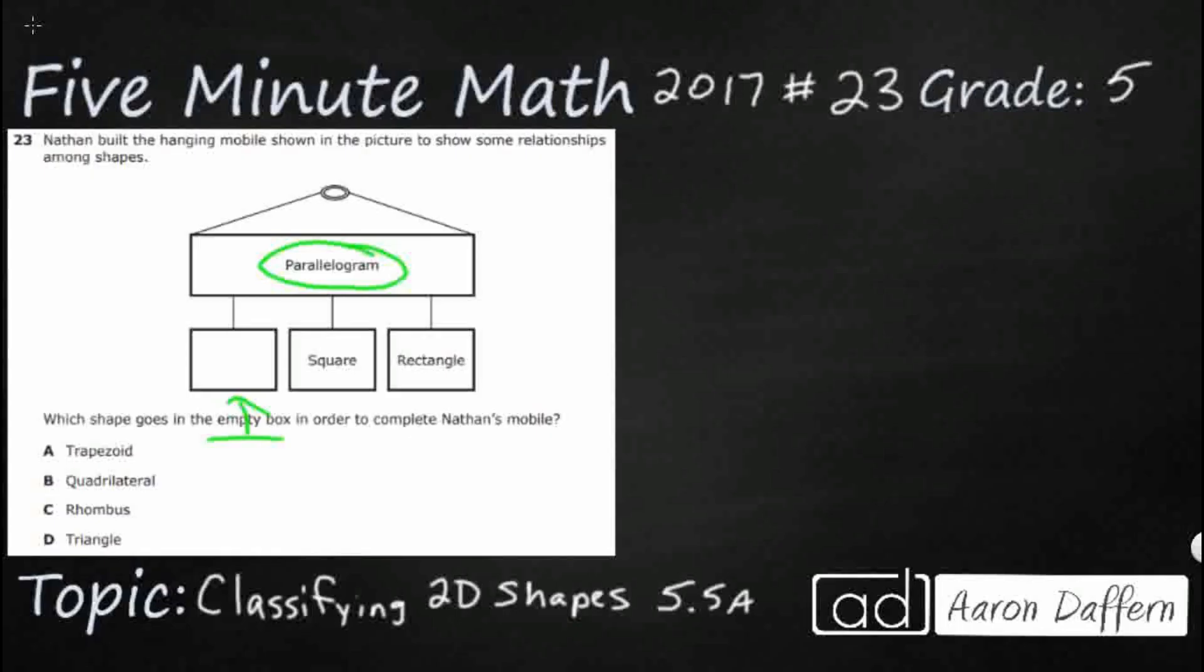Let's see if we can figure out what the relationship is. These three—the blank, the square, and the rectangle—all hang down from the parallelogram, which means they're all a part of the parallelogram. That's what this is supposed to show, as we've got two layers.